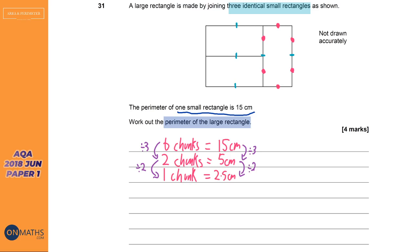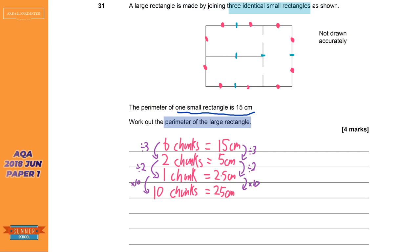Now I count how many chunks are around the large rectangle in total: 1, 2, 3, 4, 5, 6, 7, 8, 9, 10 — that's 10 chunks. So the perimeter is 10 times 2.5, which equals 25 centimetres.